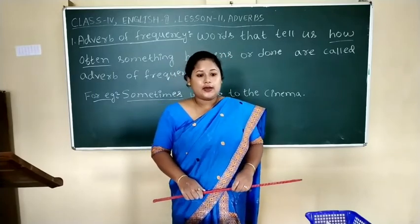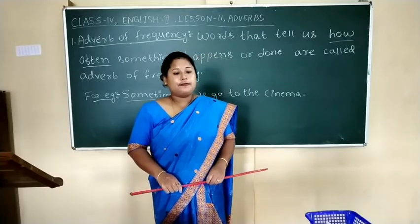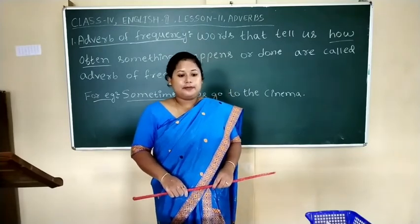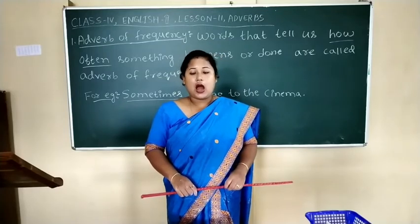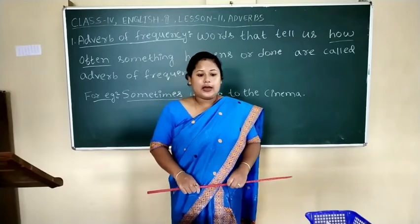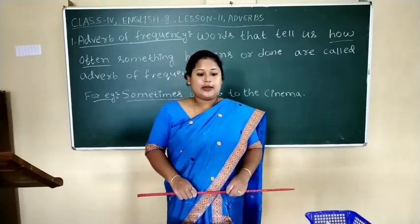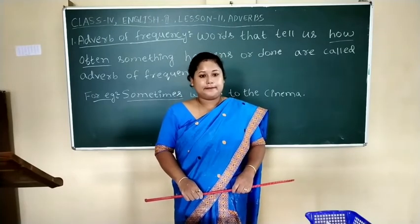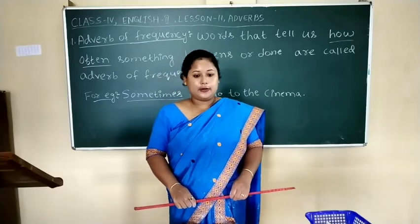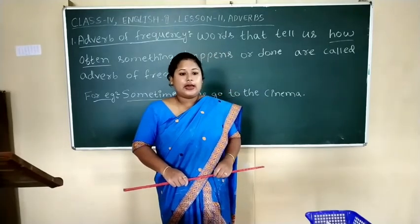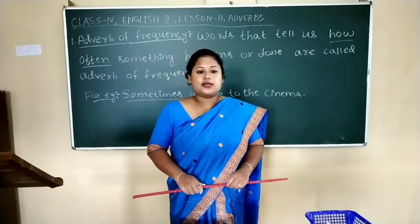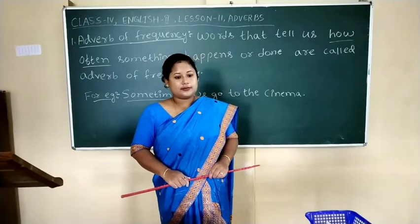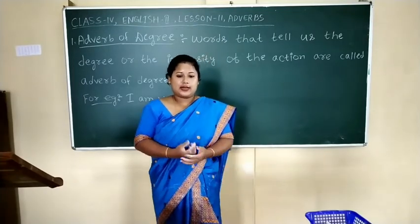Usually, rarely, always, and often are adverbs of frequency. Now let us see the position of adverbs of frequency. First, adverbs of frequency usually occur before the main verb. Second, they occur after the verb be — that is am, is, are, was, were. Third, they occur before have if it is a main verb. Fourth, they occur after have if it is a helping or auxiliary verb. Fifth, adverbs of frequency can occur at the beginning or at the end of a sentence.